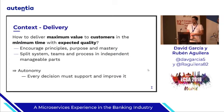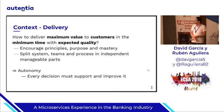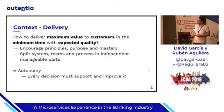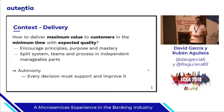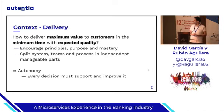How to cope with those challenges — providing maximum value to customers in the minimum time and meeting the expected quality? Well, there were two goals. First of all, fostering a culture of excellence where individuals can pursue mastery. And then, split the system, teams and processes into independent and autonomous parts. And that's the magic word: autonomy. Every decision taken must support and improve autonomy.